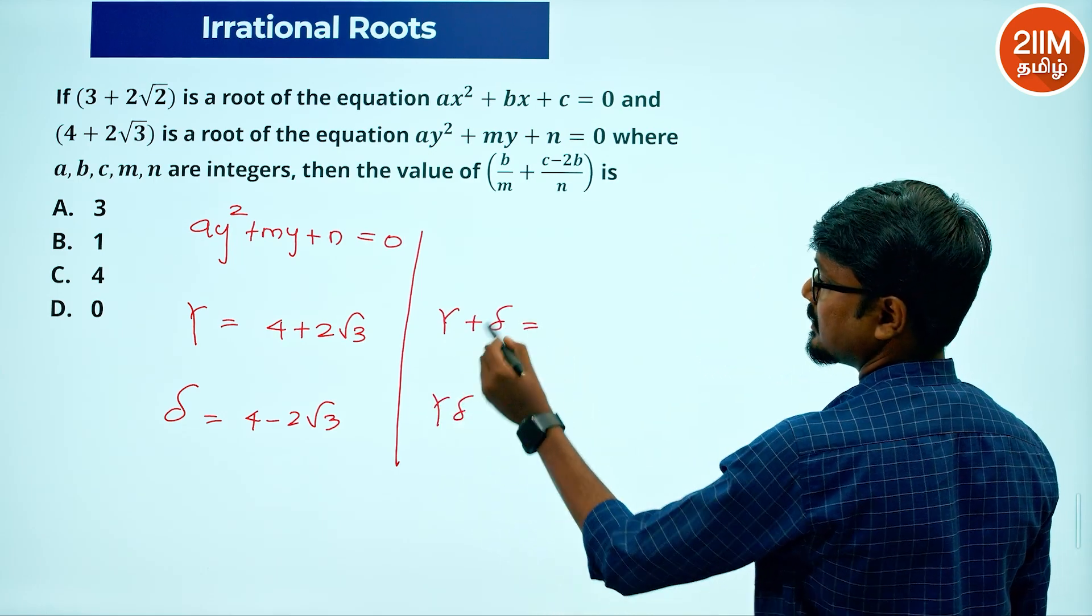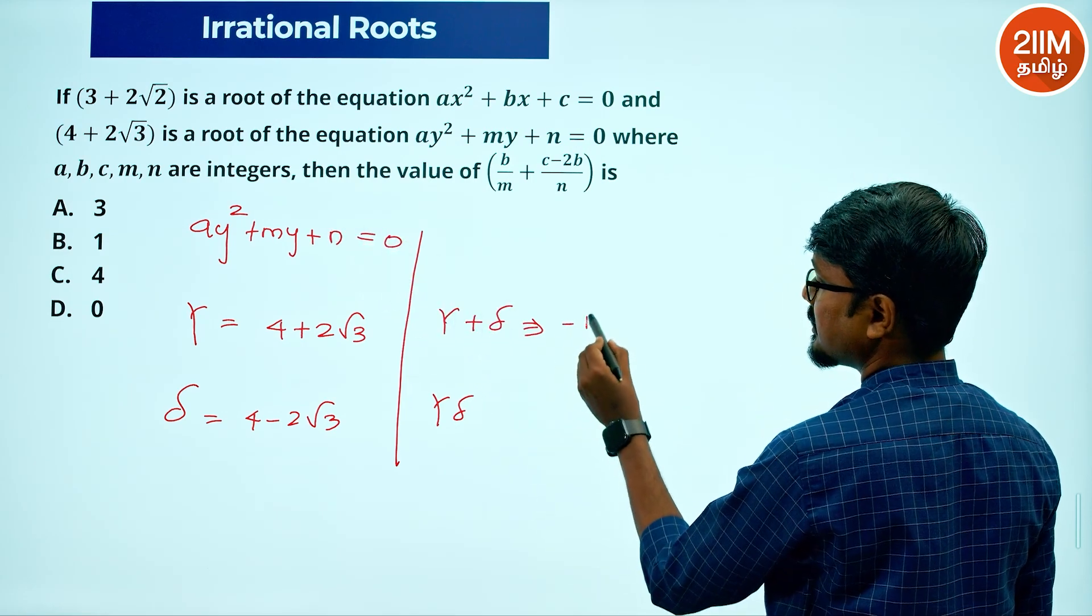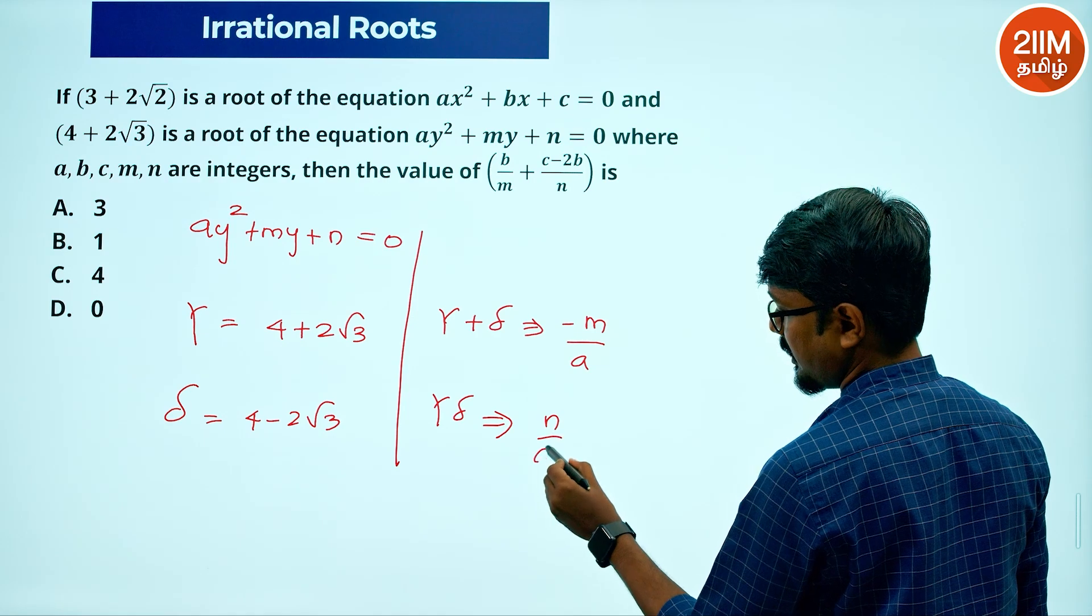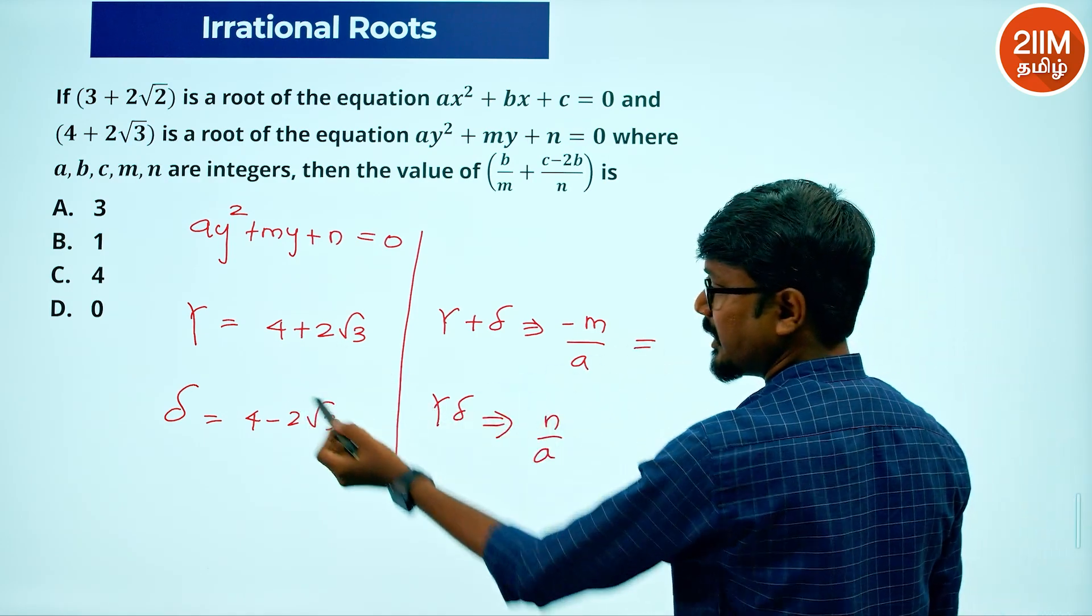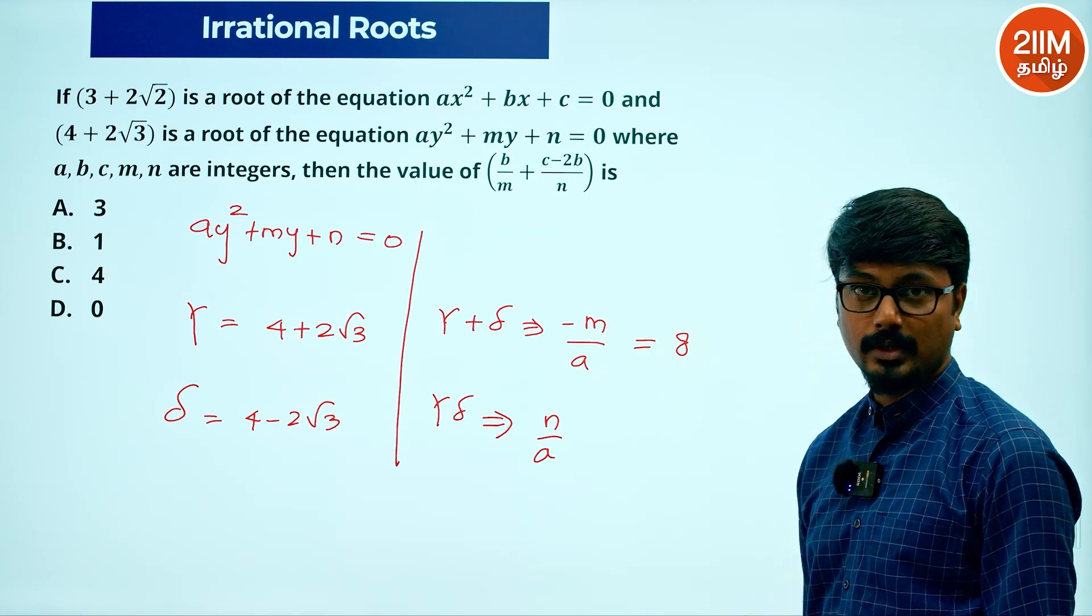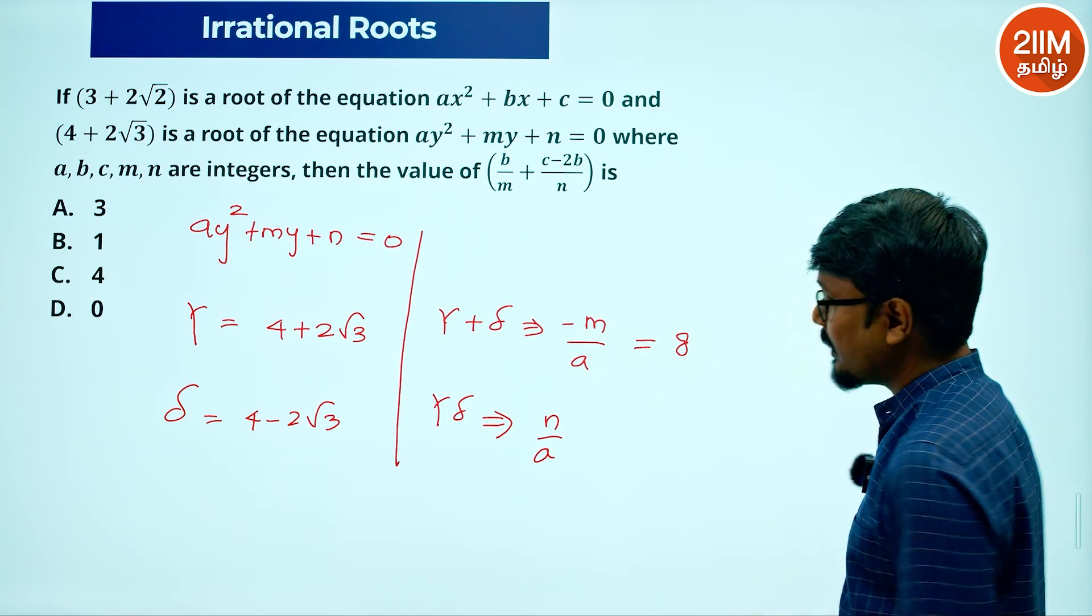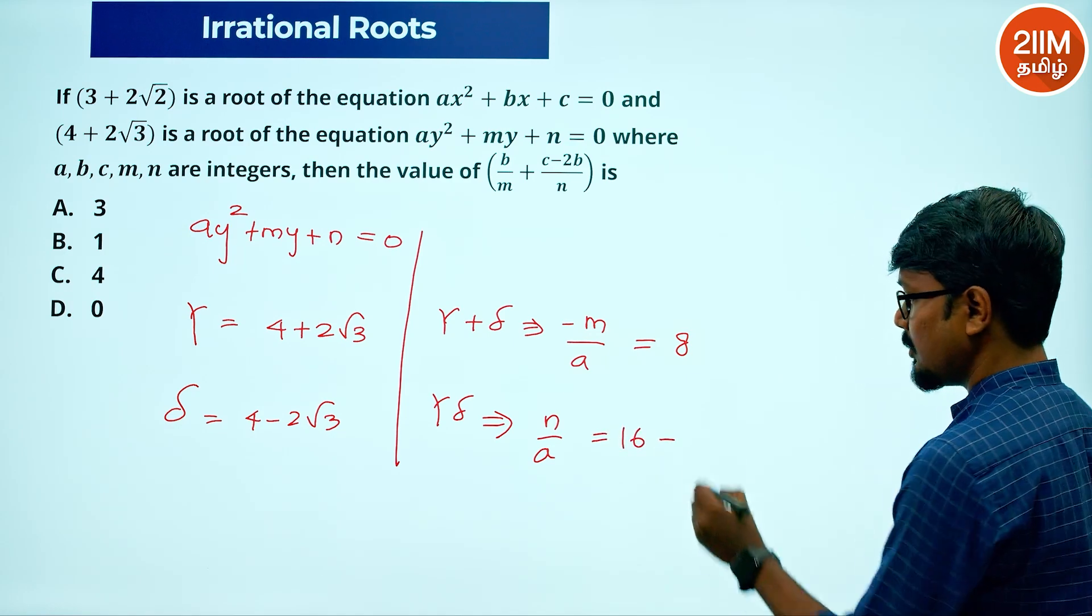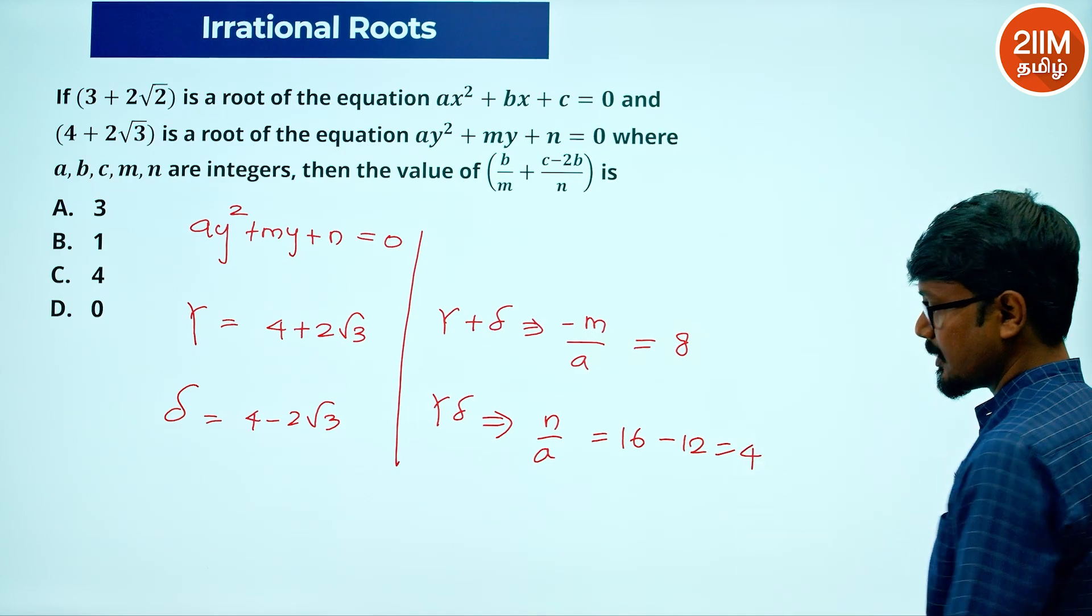Gamma plus delta, based on the equation, is minus m by a. The product is n by a. Putting in the values: 4 plus 4 is 8, plus 2 root 3 minus 2 root 3 cancelled. Using a squared minus b squared: a squared is 16, b squared is 4 times 3, which is 12. This gives 4.